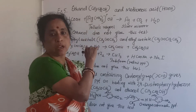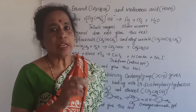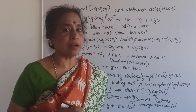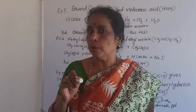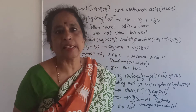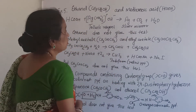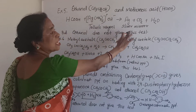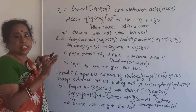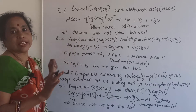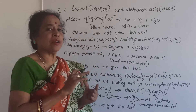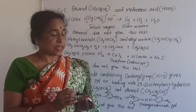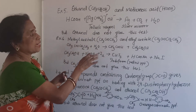Example 5: Ethanol and methanoic acid (HCOOH). Methanoic acid gives a silver mirror test — you treat it with Tollens' reagent and heat it, giving a silver mirror on the inner side of the test tube. Ethanol does not give this test. Only methanoic acid gives the silver mirror test, and ethanol does not give this test.